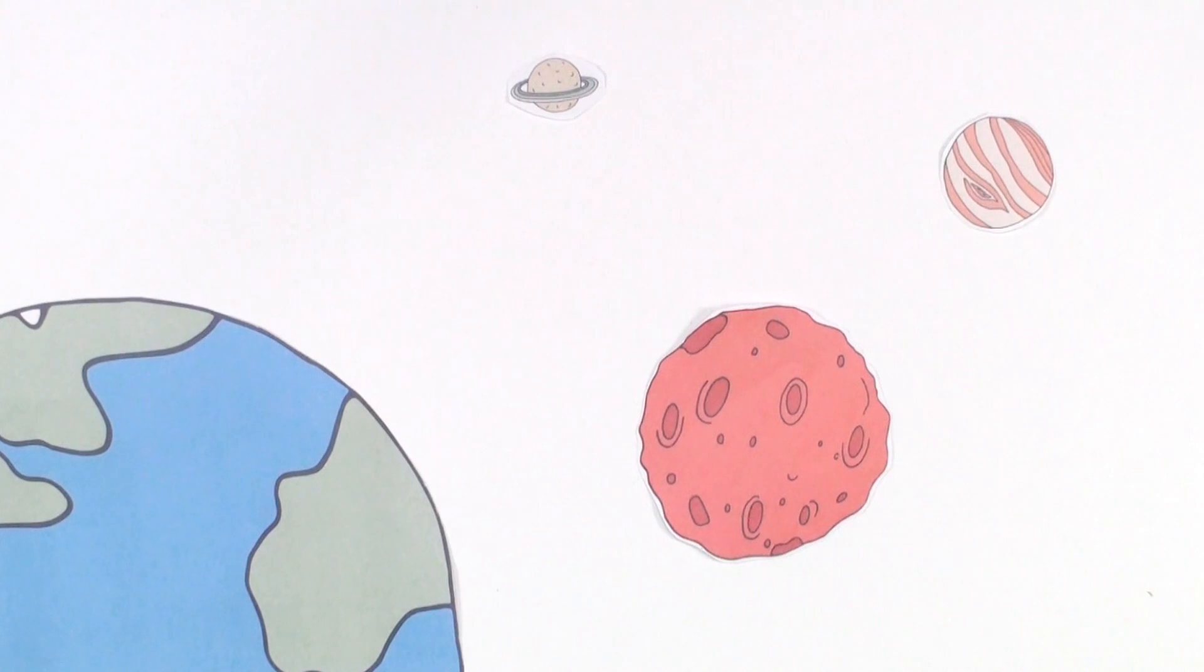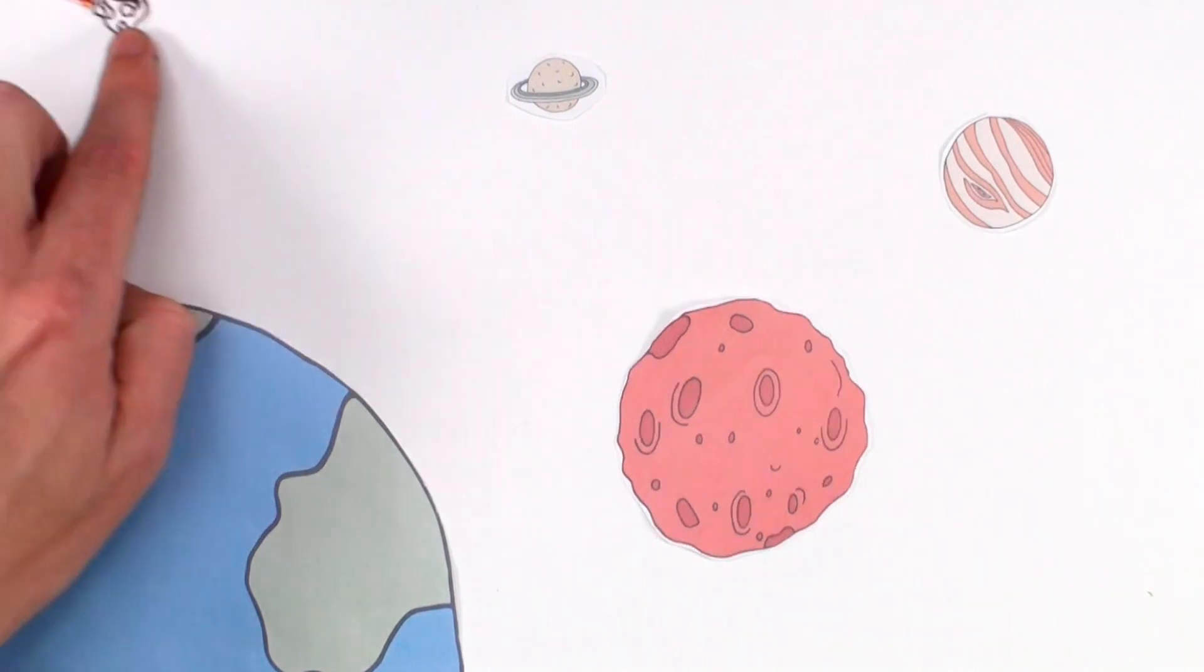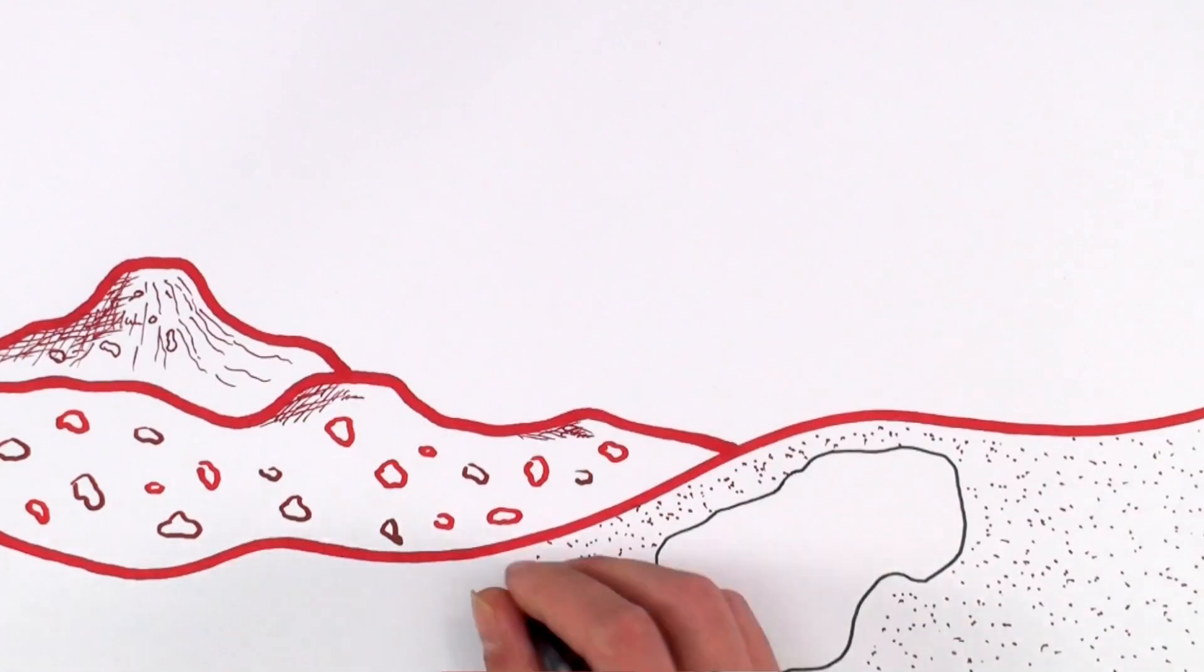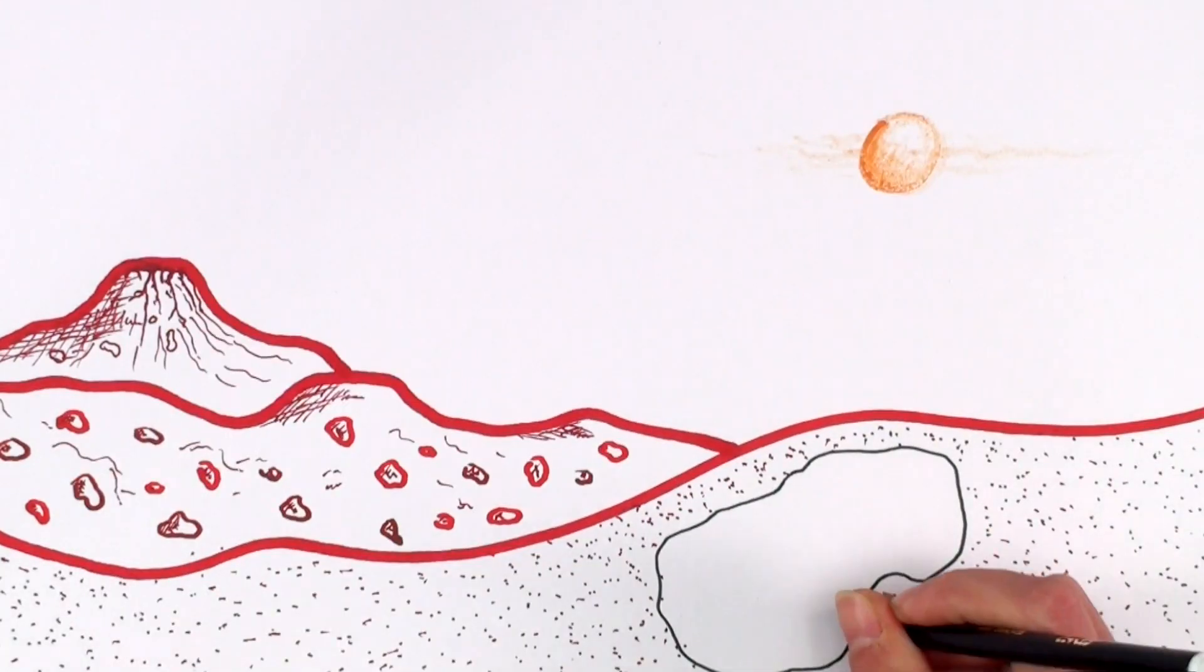Then suddenly, some meteorite hit us with extreme violence. This caused my plain, smooth structure to be cracked all the way through.